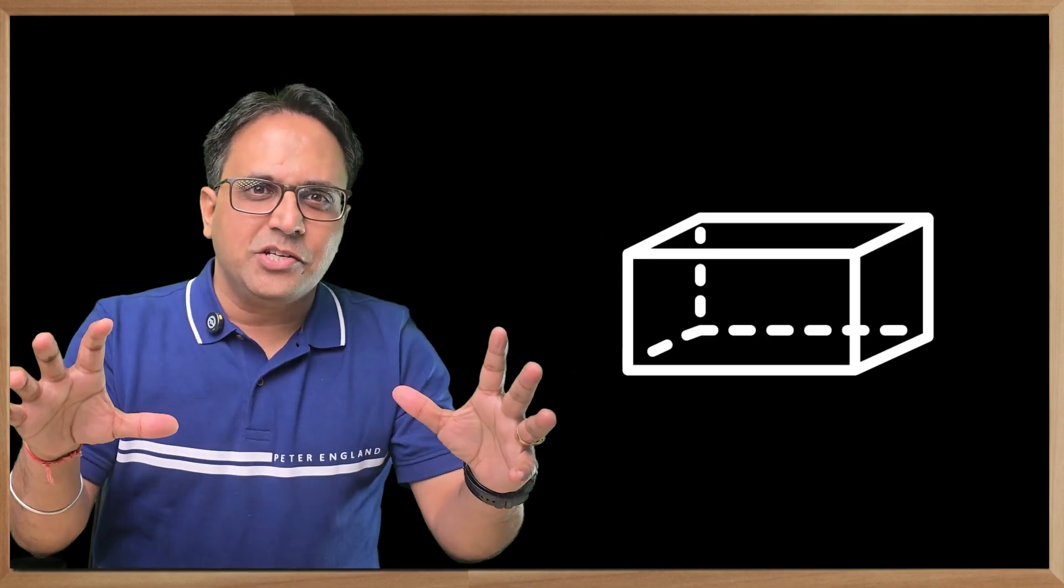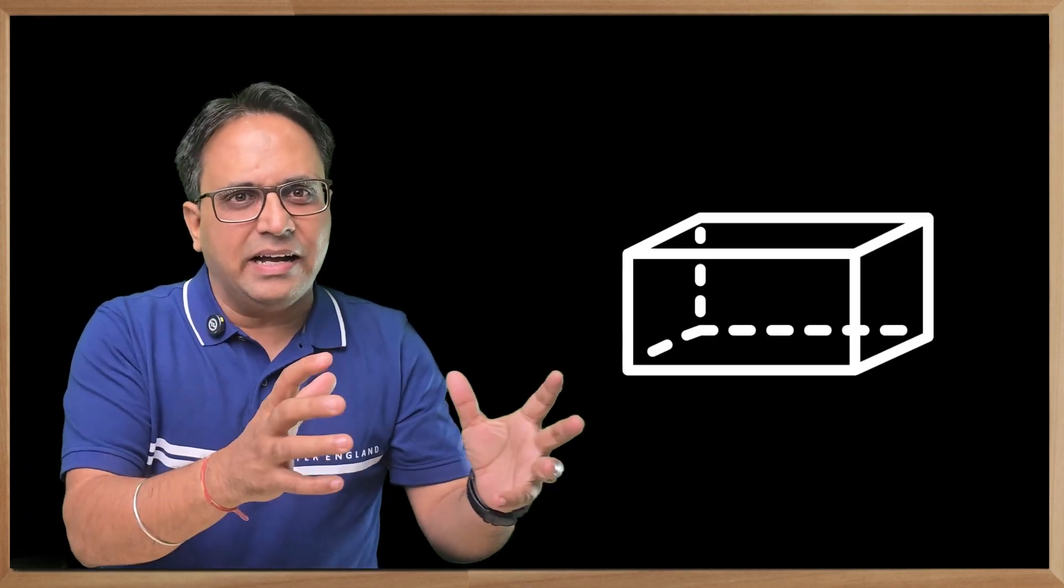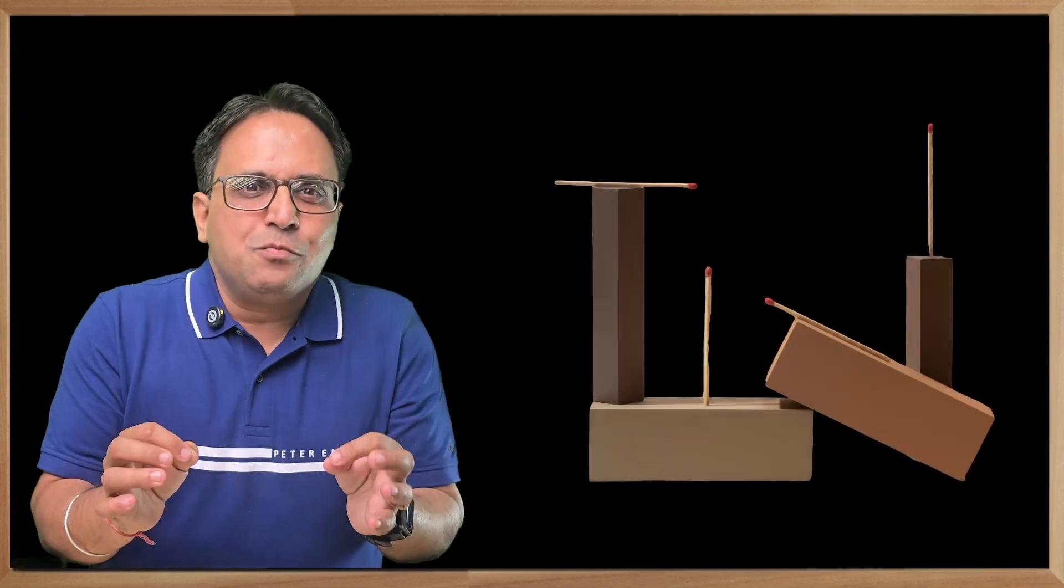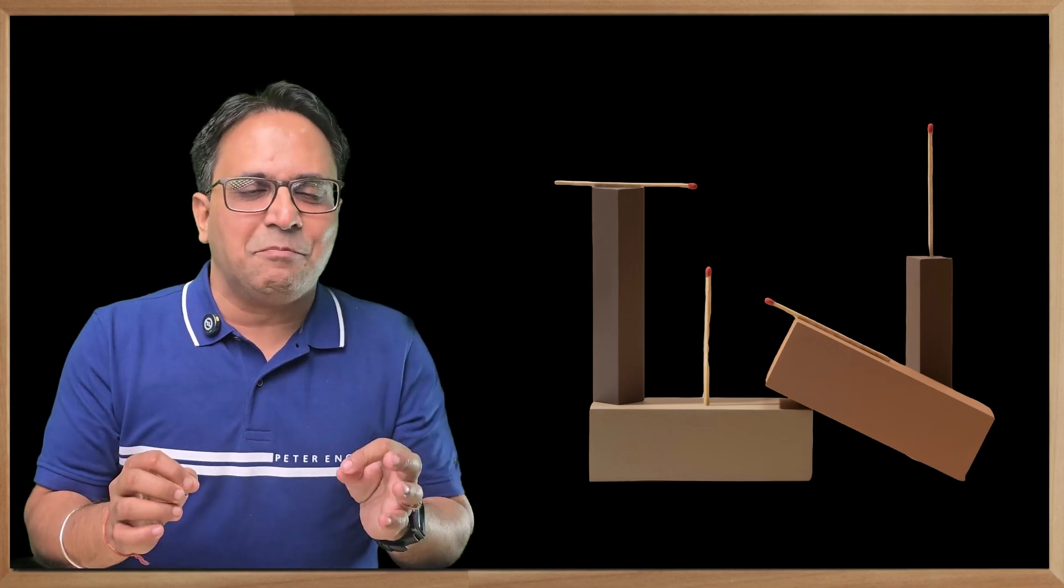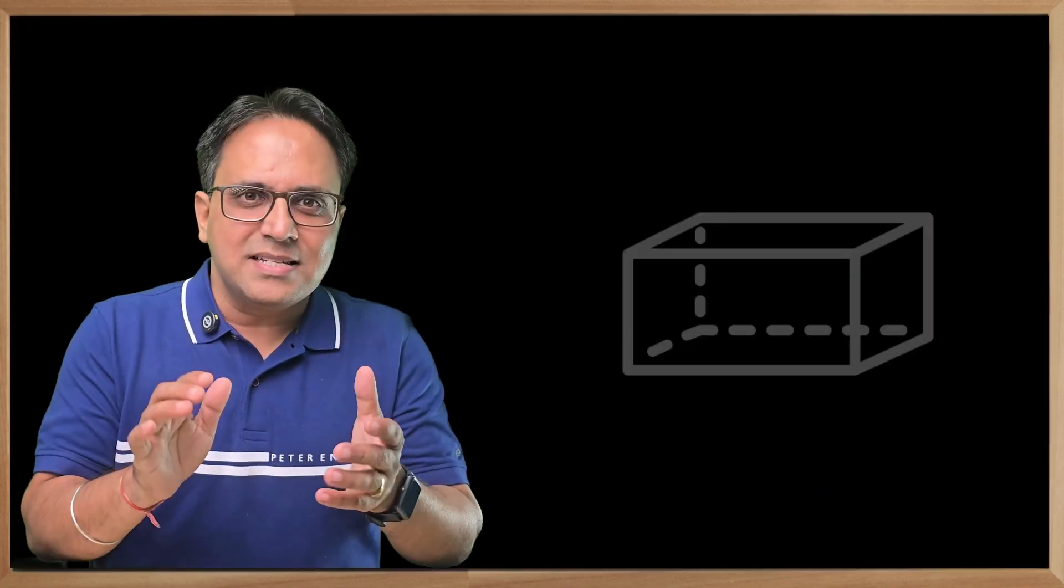A cuboid is an unsymmetrical structure. All its three dimensions - length, breadth, and height - are different, unlike a cube where all three dimensions are the same. A matchbox is a classic example of a cuboid.